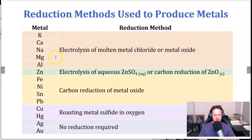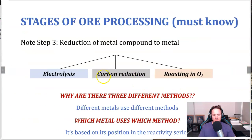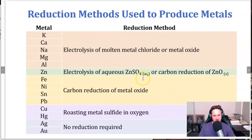The more reactive metals at the top — remember, easily oxidized, hard to reduce — use electrolysis of molten metal chloride or metal oxide. This is very expensive. Zinc can be reduced by electrolysis of aqueous zinc sulfate solution or by carbon reduction of zinc oxide. Metals in the middle range require carbon reduction of a metal oxide. Lower metals use roasting of a metal sulfide in oxygen. The least reactive metals are found uncombined — no reduction required. Note that some of these categories overlap a little.